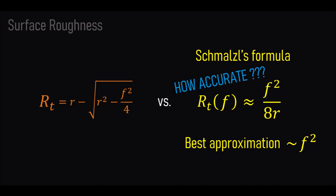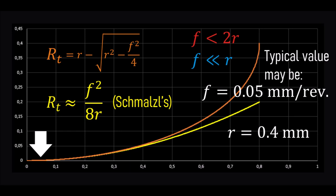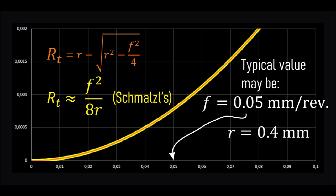How accurate is this approximation? Let's plot the graphs of the original exact formula and the Schmalz formula. For this graph, I'm using R equals 0.4, a pretty typical value for the nose radius of cutting inserts available on the market. Note that the feed rate F must be smaller than 2 times the radius R, meaning F cannot be greater than 0.8. Up to F equals 0.4 mm/rev the two functions are pretty much the same, but then they diverge. However, in practice the feed rate is much smaller — a typical value for a well-finished surface is 0.05 mm/rev — and if we zoom in, the two functions overlap perfectly for small values of F.